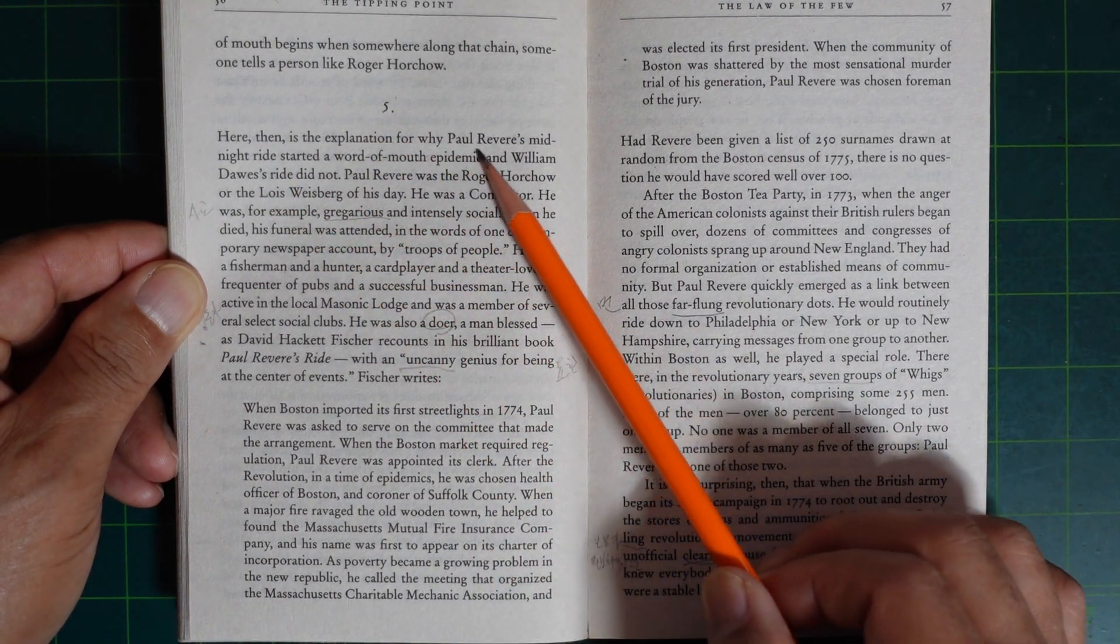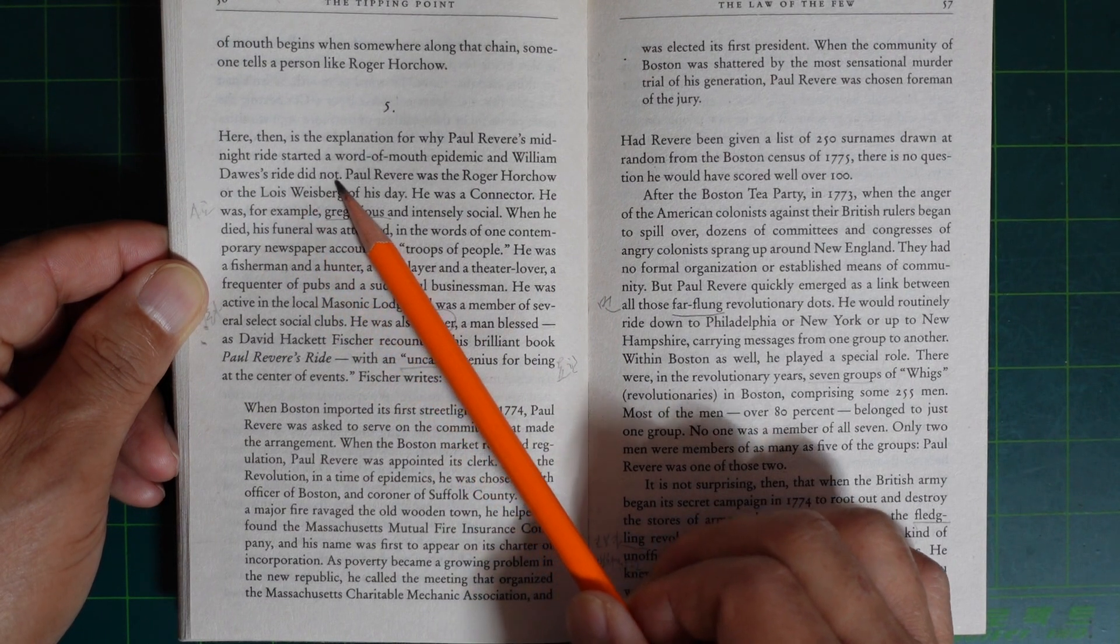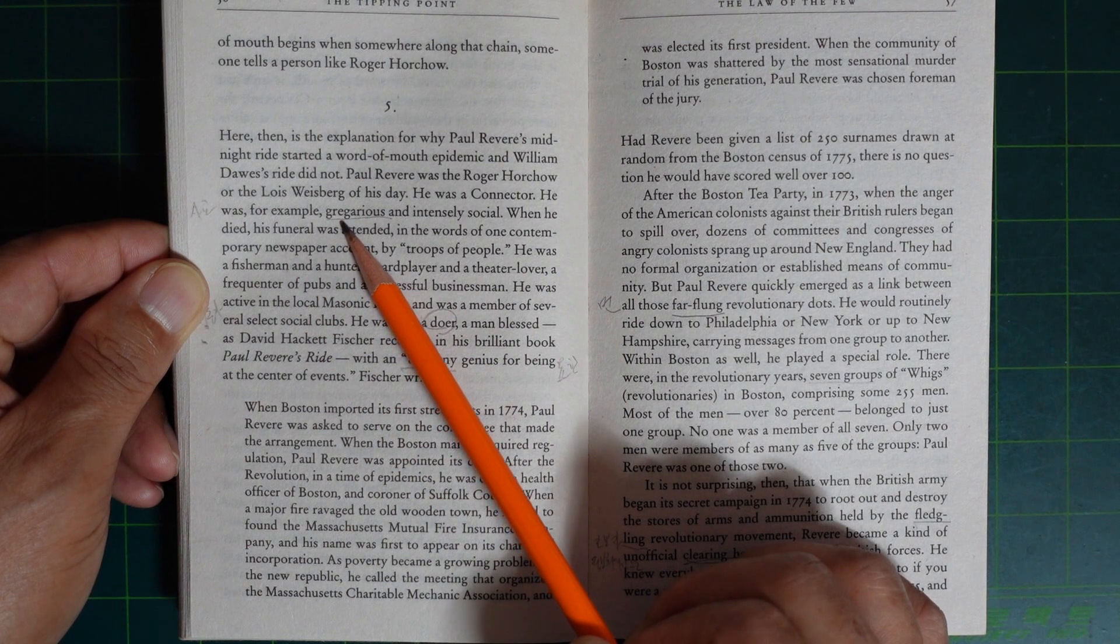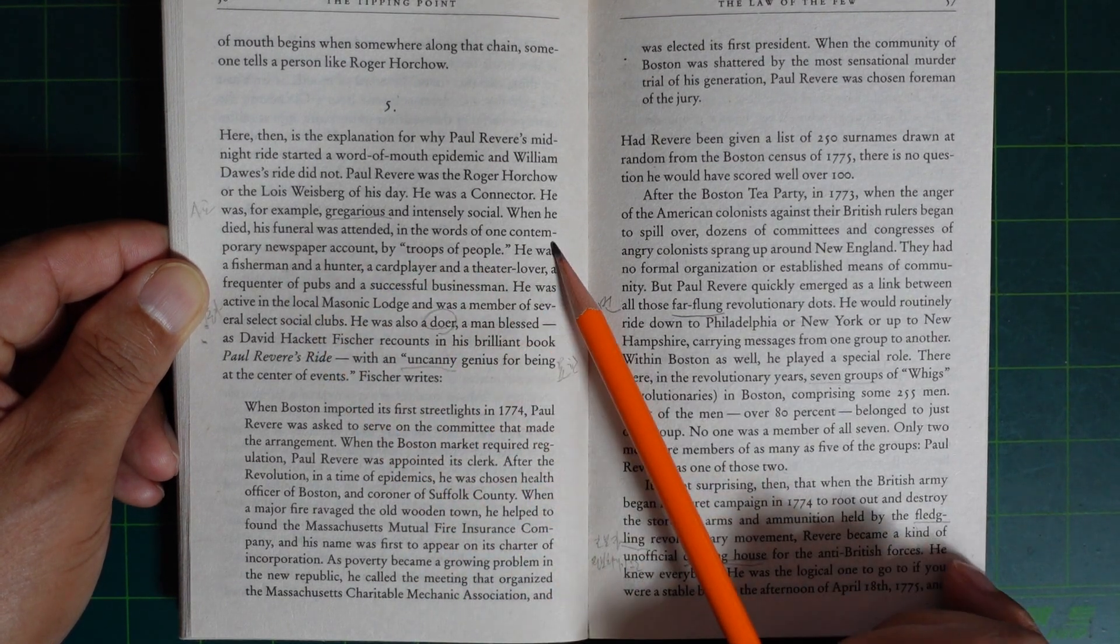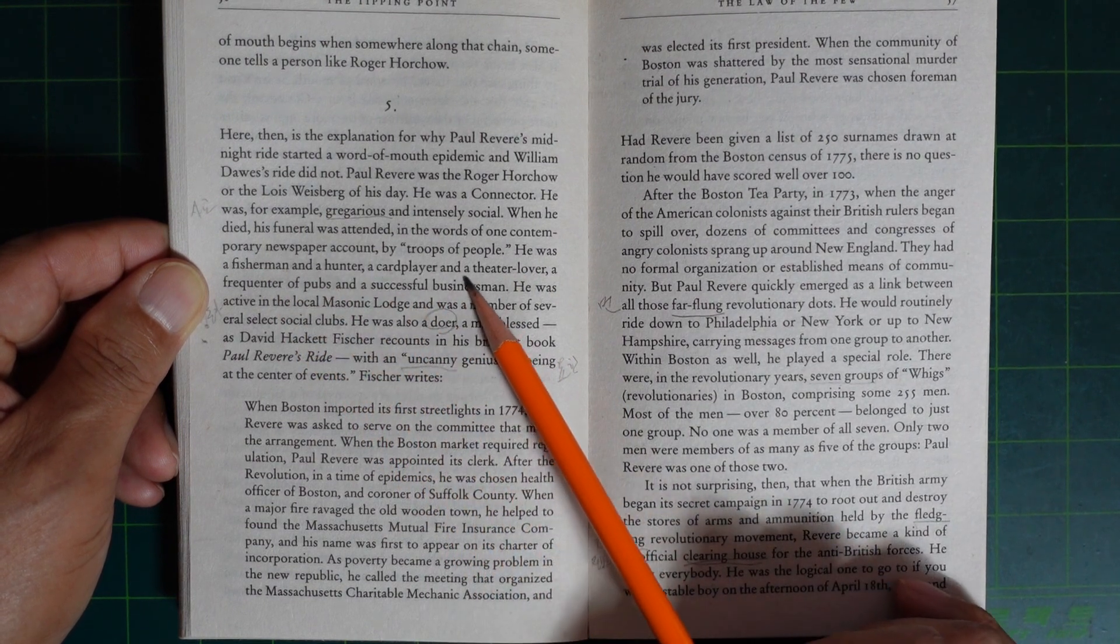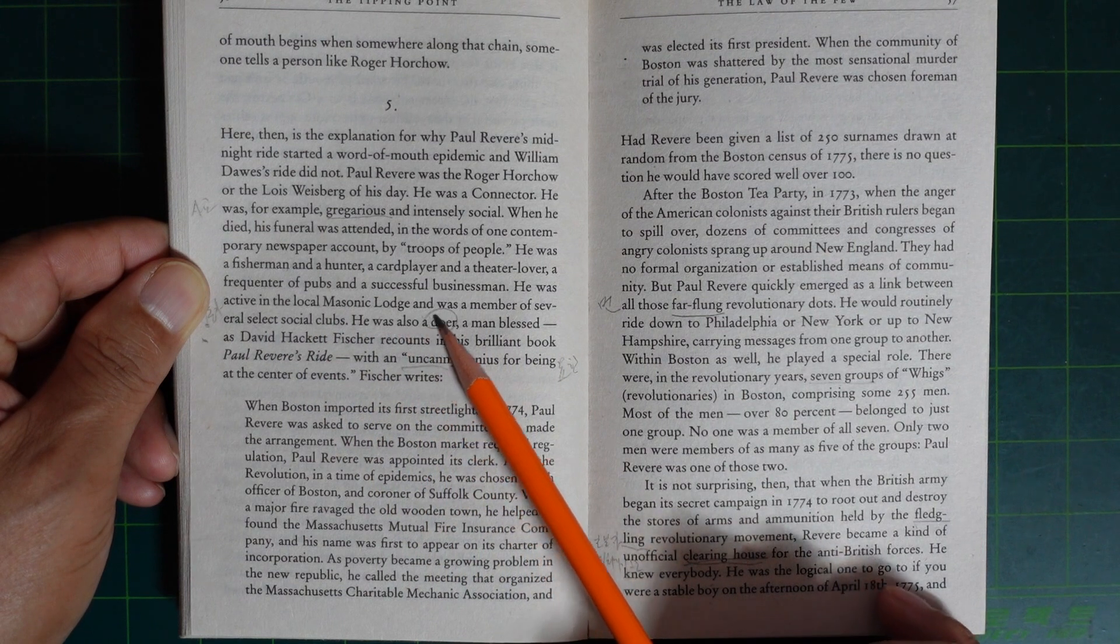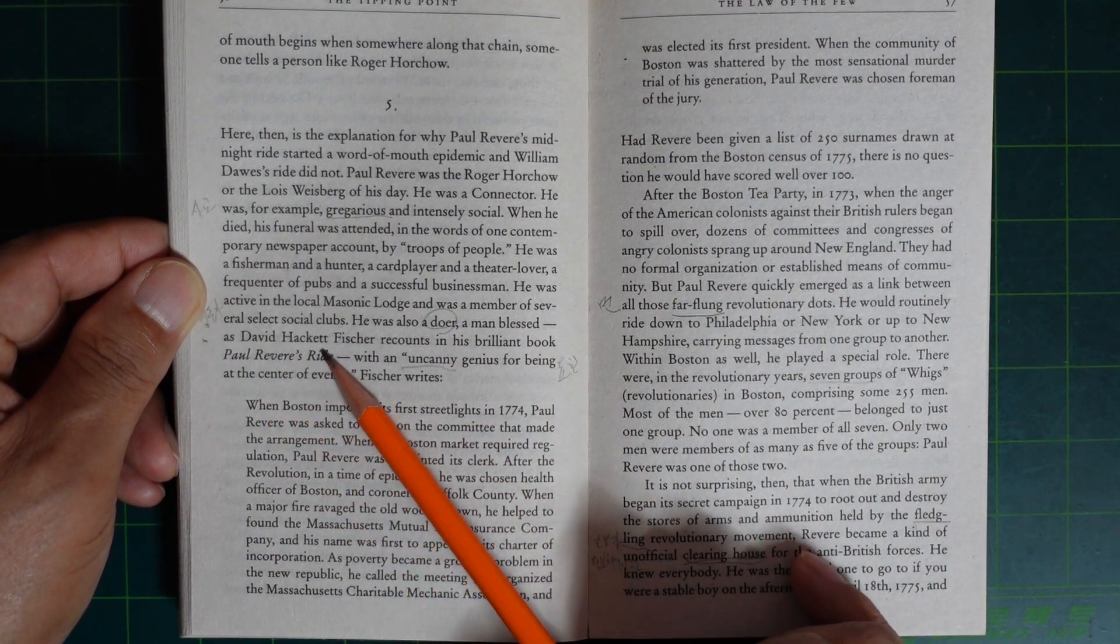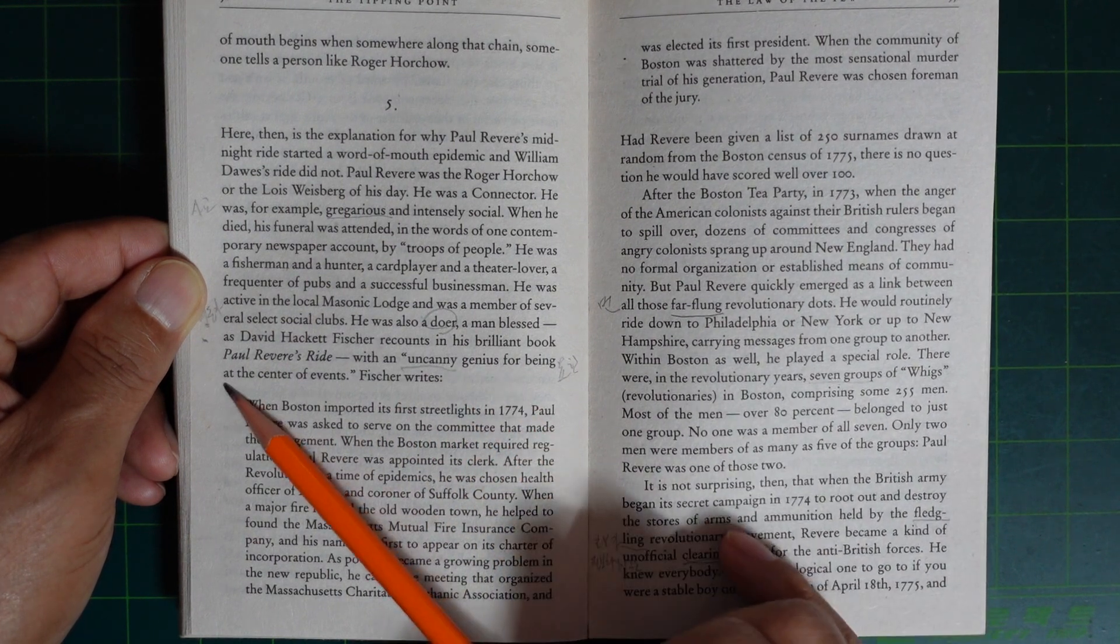Here then is the explanation for why Paul Revere's midnight ride started a word-of-mouth epidemic and William Dawes's ride did not. Paul Revere was the Roger Horchow or Lois Weisberg of his day. He was a connector. He was, for example, gregarious and intensely social. When he died, his funeral was attended by, in the words of one contemporary newspaper's account, troops of people. He was a fisherman and a hunter, a card player, a theater lover, a frequent patron and successful businessman. He was active in the local Masonic lodge and was a member of several select social clubs. He was also a doer, a man blessed, as David Hackett Fischer recounts in his brilliant book Paul Revere's Ride, with an uncanny genius for being at the center of events.